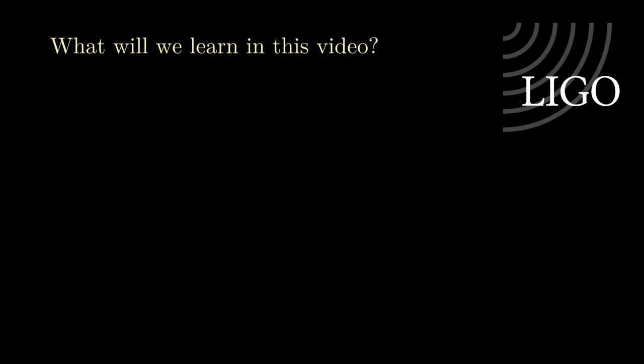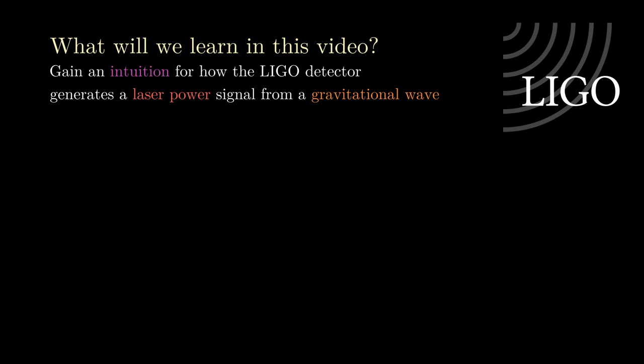What will we learn in this video? My hope is that we will gain an intuition for how the LIGO detectors generate a laser signal from a gravitational wave. You may have heard that gravitational waves are exceedingly small and create length changes which are a thousand times smaller than an atomic nucleus. And you may wonder, how is it possible to detect something that is smaller than a nucleus of an atom?